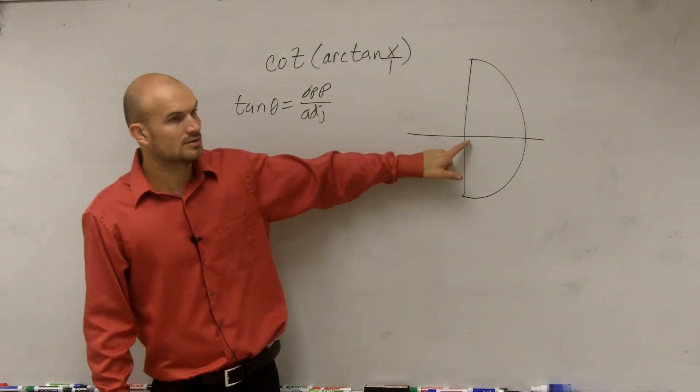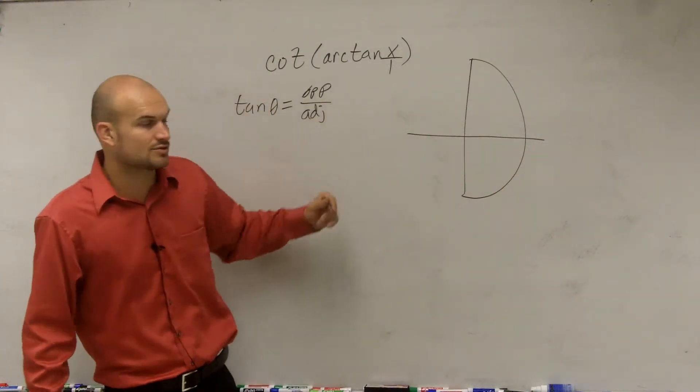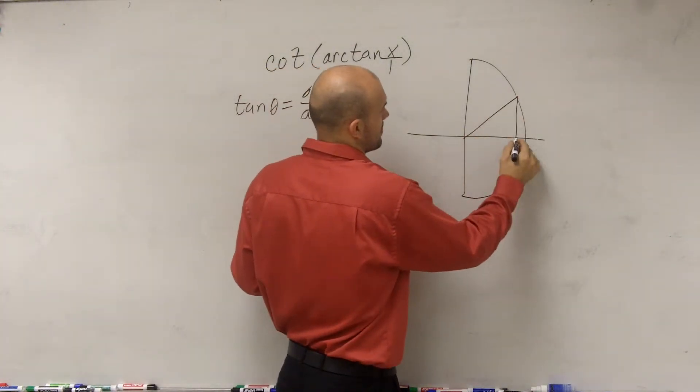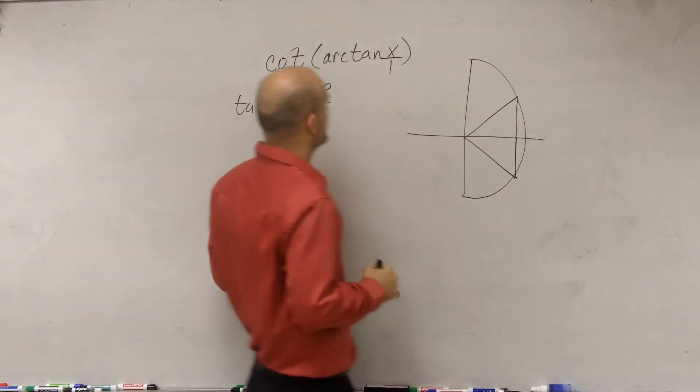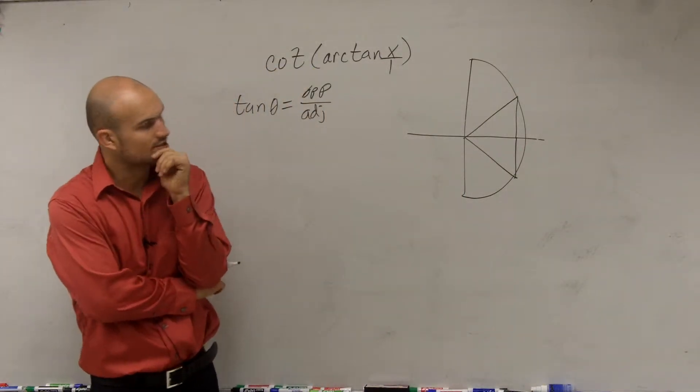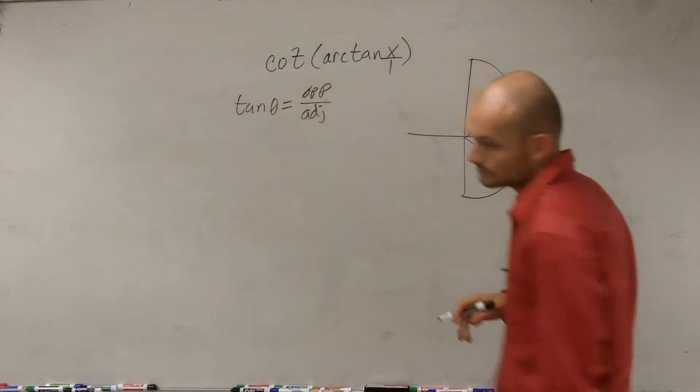So therefore, we're looking at here is going to be our adjacent side, and then we have our tangent, which is going to be x, which we know that it has to be 1. But we're still just going to be kind of looking at this and being, hmm, you know, which one is going to be x playing with.